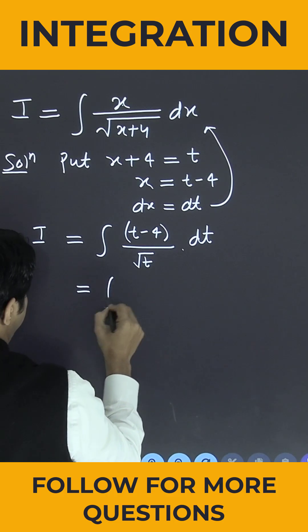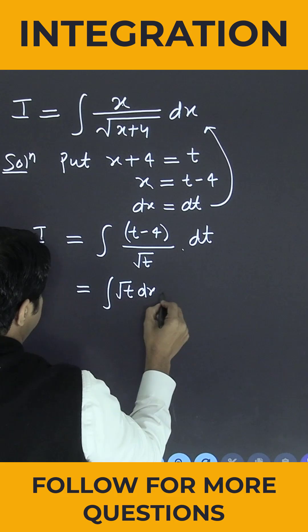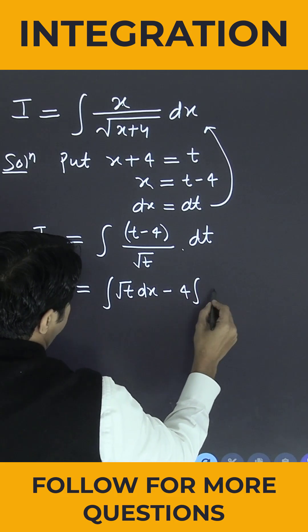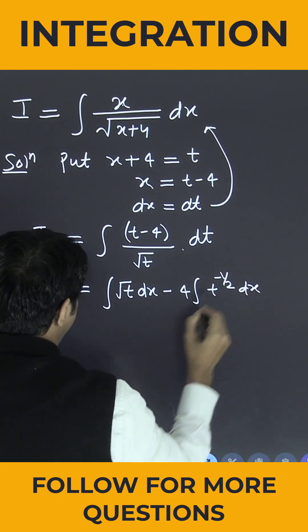So this is nothing but the integration of root t dx minus 4 outside. It becomes t to the power minus 1 by 2 into dx.